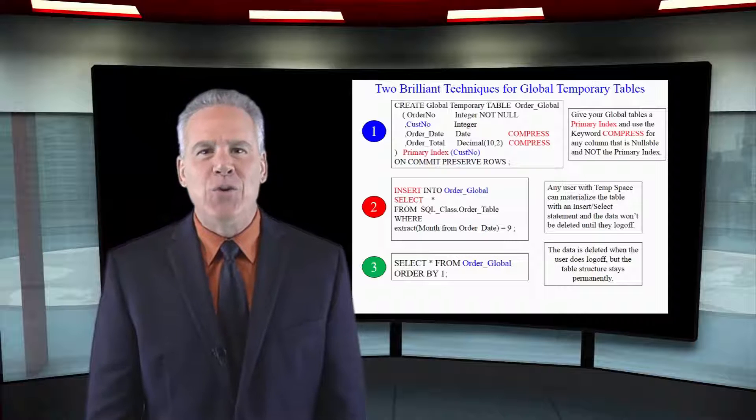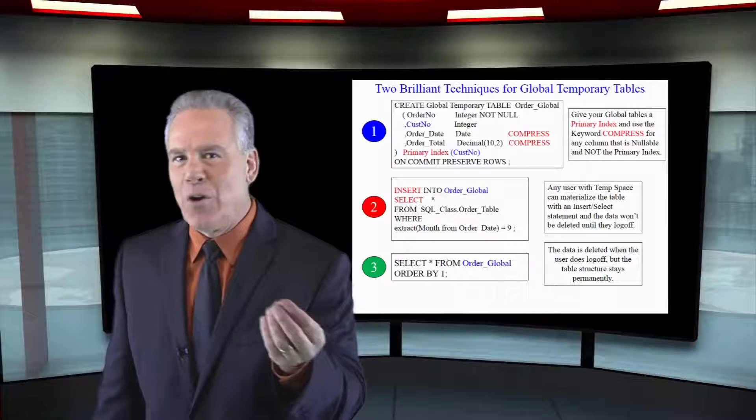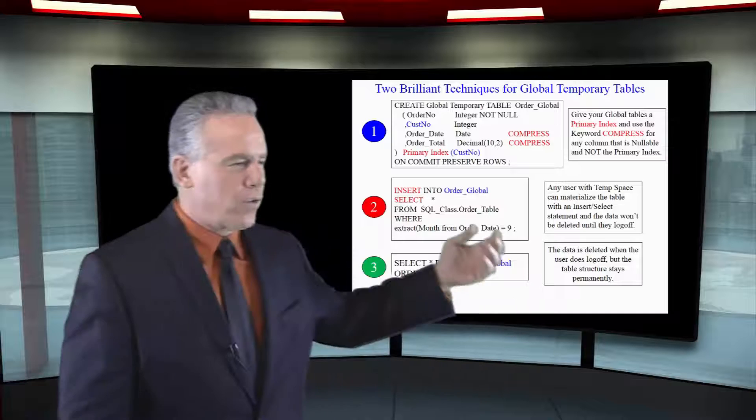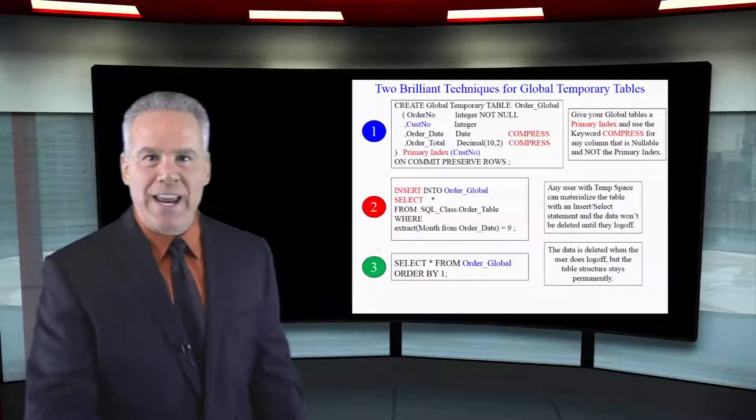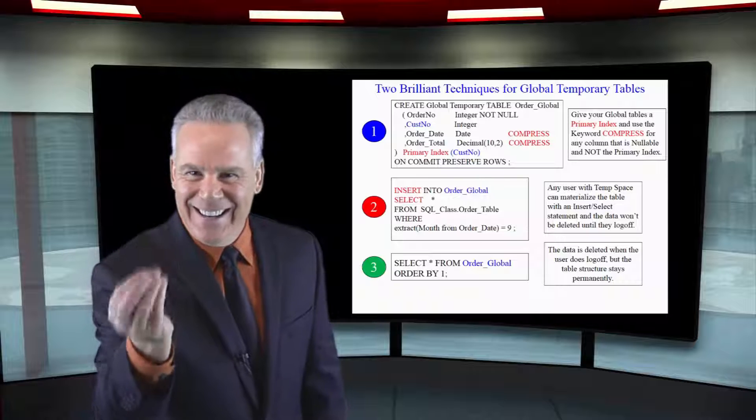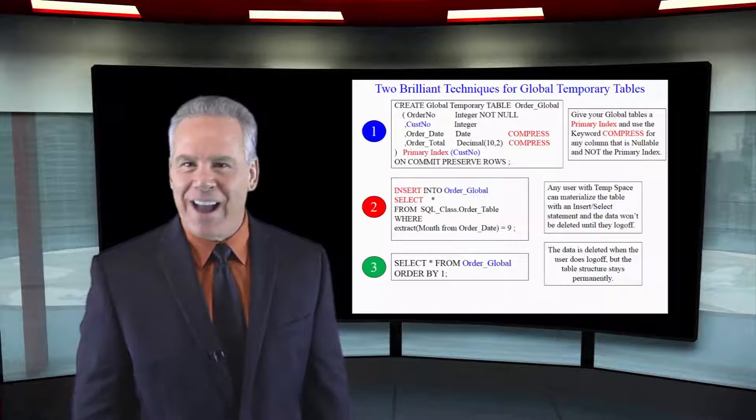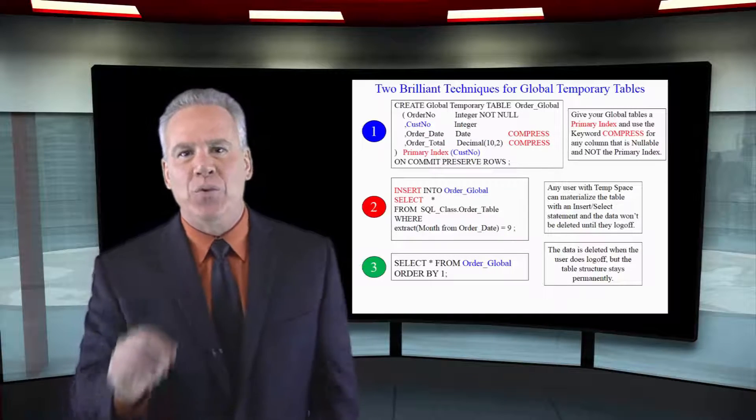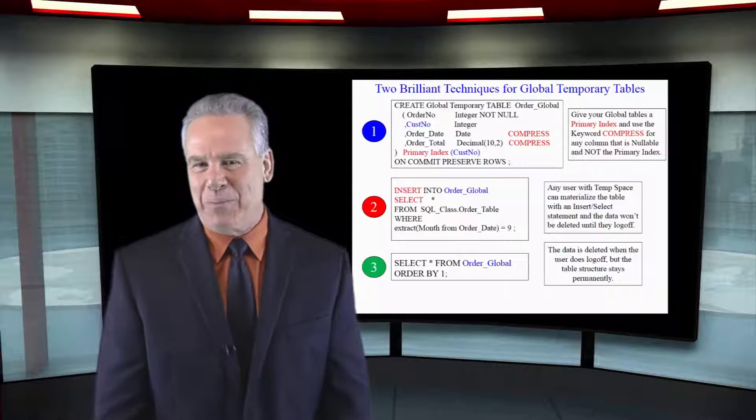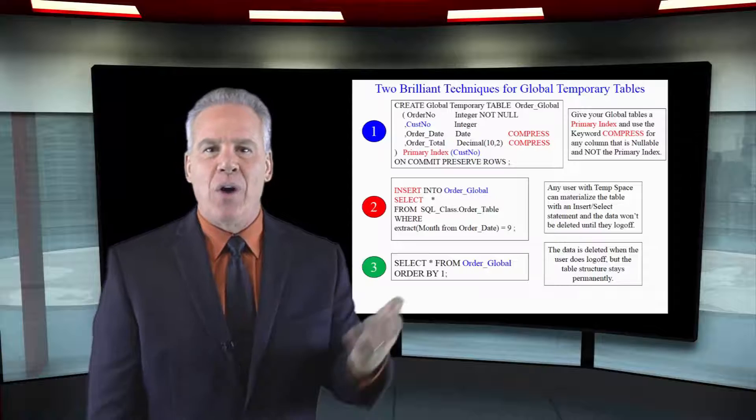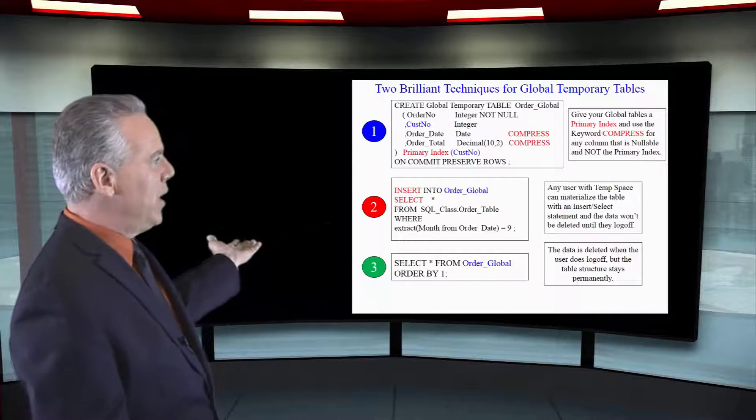I've got two great techniques for your global temporary tables. Take a look here. First of all, you'll notice that I've given this global temporary table a primary index. Do that every time. Otherwise, it will default to the first column in the table and make it a non-unique primary index. So I've taken care of that with my primary index statement here.